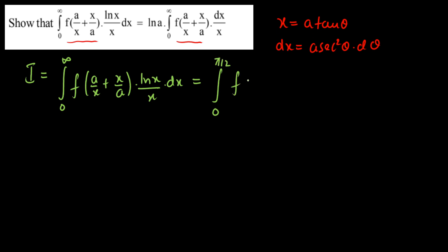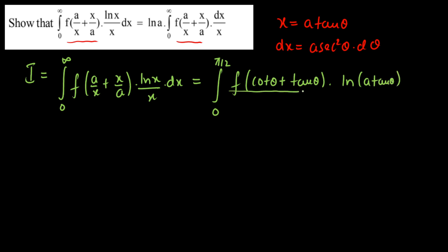Now we substitute: a/x and x/a simplify so f becomes f(cot(θ) + tan(θ)). The ln term becomes ln(a·tan(θ)), divided by a·tan(θ), and the differential is a·sec²(θ) dθ.